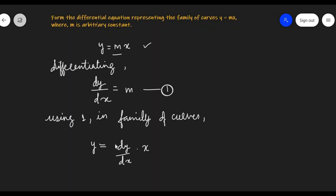Now we have to bring this in the form of a differential equation. So I can write this as y minus dy/dx times x equals 0.